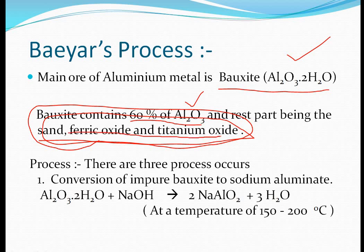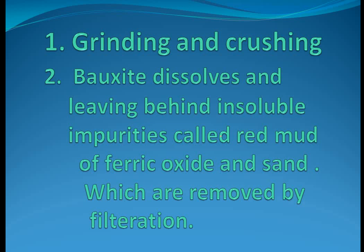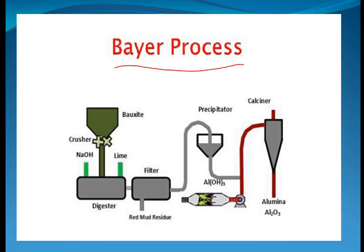These impurities — sand, ferric oxide, and titanium oxide — are present in the bauxite ore, so we require purification to remove them. For purification, the very first step is to finely divide, grind, and crush the ore. After crushing, the substance is heated up and a few impurities can be evolved out and removed.